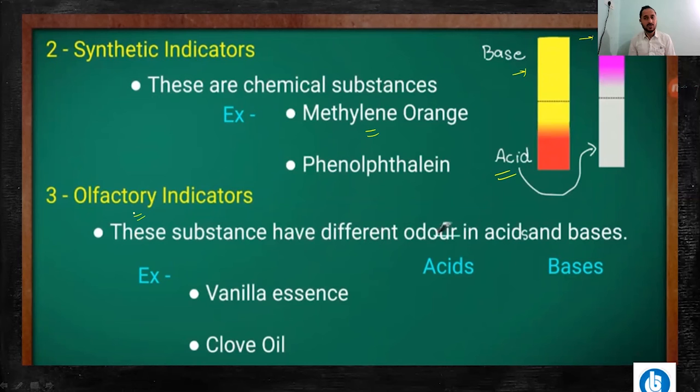And this is the olfactory indicator. Olfactory indicators use smell — because sometimes we don't know completely what the solution is from colour alone. Olfactory indicators give indication by changing their odour. If the odour changes when we add acid or base, we tell that the particular substance is an acid or a base. Examples are vanilla essence, clove oil — so these are olfactory indicators.